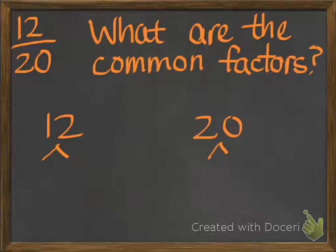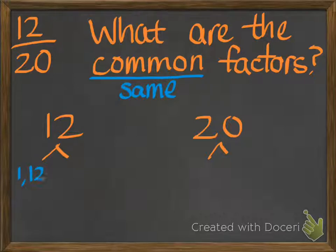For example, if we have 12 twentieths, what are the common factors of 12 and 20? What numbers can you multiply together to get 12? And what numbers can you multiply together to get 20? We're going to look for the common factors — the factors that are the same between them. I know that 1 times 12 equals 12, 2 times 6 equals 12, and 3 times 4 equals 12. Those are the only numbers I can multiply to get 12.